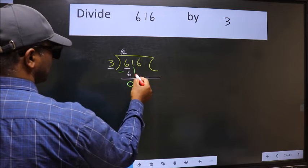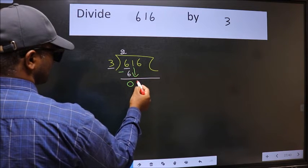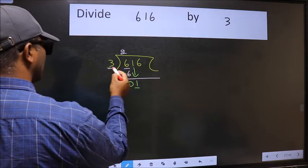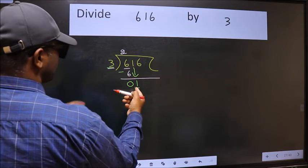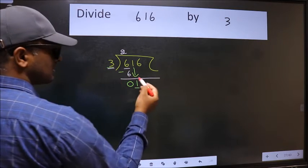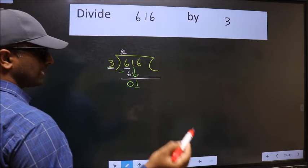After this, bring down the beside number. So 1 down. Now here we have 1 and here 3. 1 is smaller than 3, so we should bring down the second number.